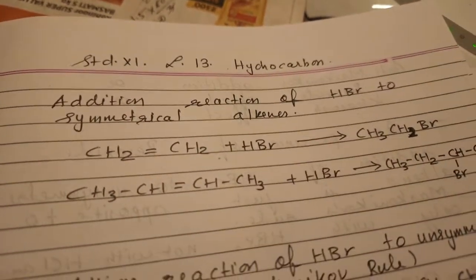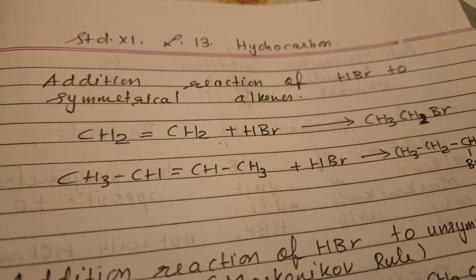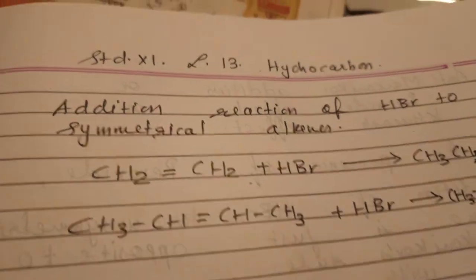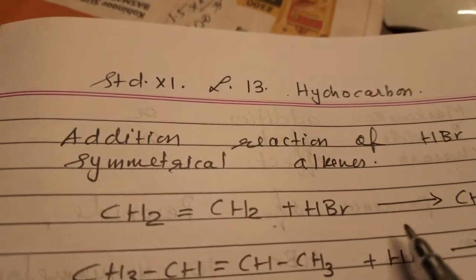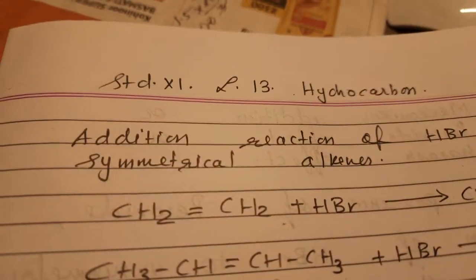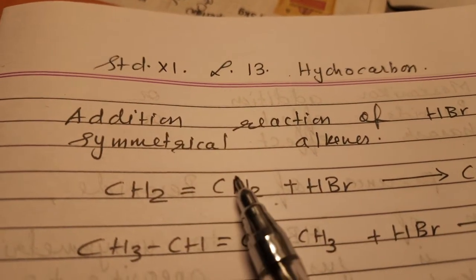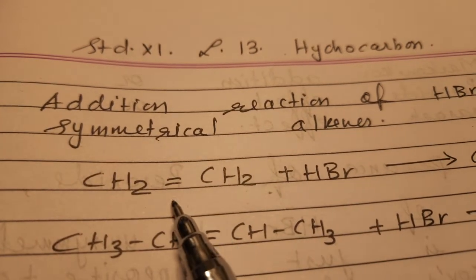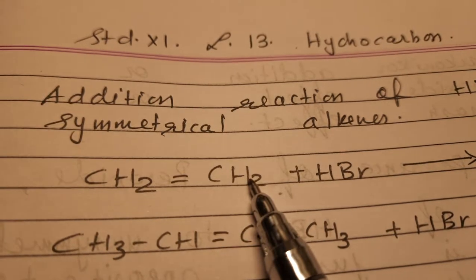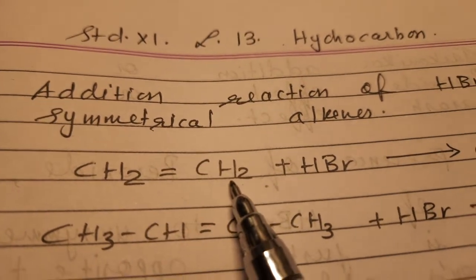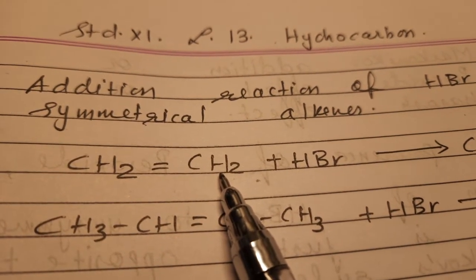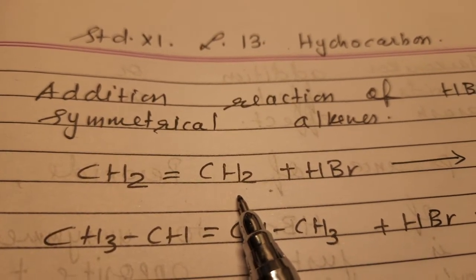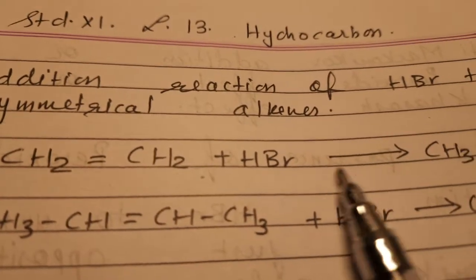Good morning dear children. Today I will explain lesson 13: what is Markovnikov's rule and what is anti-Markovnikov's rule. We start with the addition reaction of HBr to symmetrical alkene. A symmetrical alkene is when around the double bond, both sides have equal numbers of carbon and hydrogen atoms.